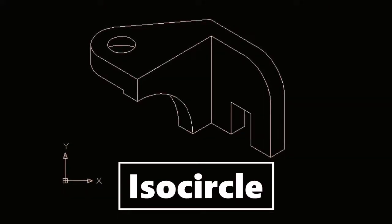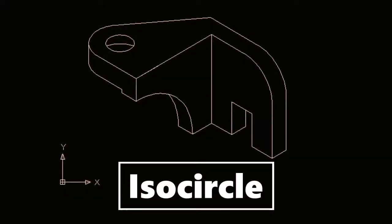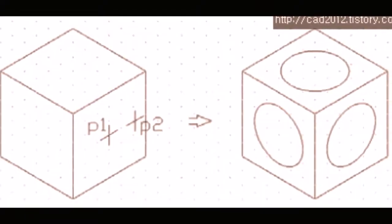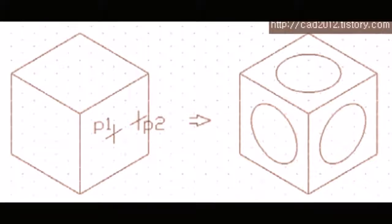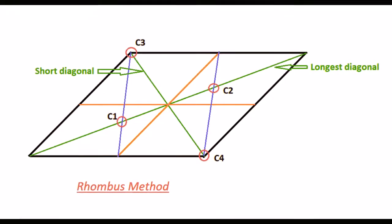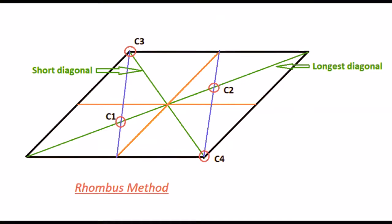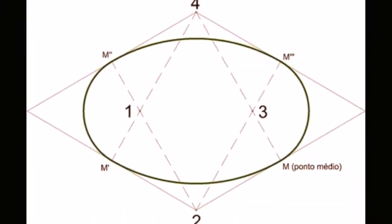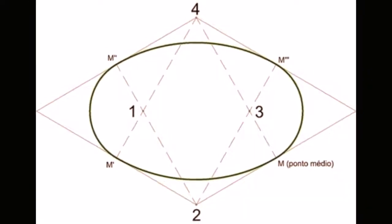In this tutorial, I will try to provide a brief description on drawing isocircle by using the rhombus method. In isometric drawing, the circle on a plane appears as an ellipse since the isometric axes are at 120 degrees to each other. The circle in isometric projection is called isocircle in technical term, which is basically an ellipse.